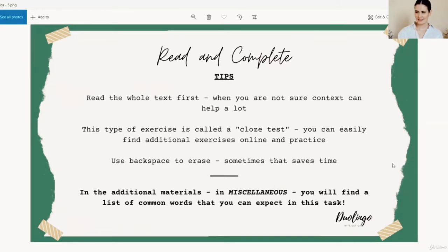The second tip that I can give you is the name of this type of exercise, and that's a cloze test. And if you look this up online, you can find additional exercises and practice a lot. The third one is a time-saving tip, and that's to use the backspace to erase. Do not move your pointer because, as we've gone through in the rules, if you just move it to the end of the screen, they can think you're accessing another app. So just leave the mouse pointer somewhere in the middle and delete the letters that you have typed with the backspace.